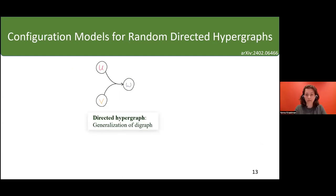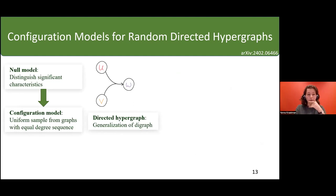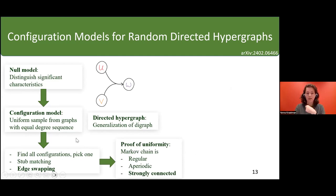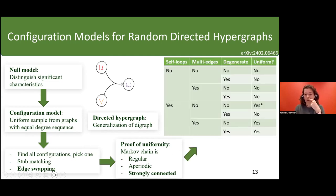To wrap up: directed hypergraphs generalize digraphs; the null model is important for distinguishing significant from non-significant characteristics; to obtain the null model we need a uniform sample from graphs with the same degree sequence — the configuration model. There are three ways to do this: enumerate all configurations, stub matching, and edge swapping. For edge swapping, proving strong connectedness of the Markov chain is the most difficult and important step, leading to the results we presented.